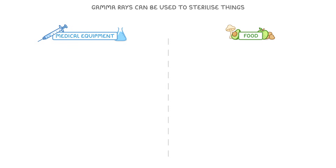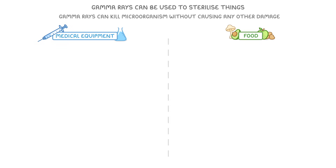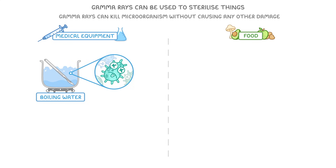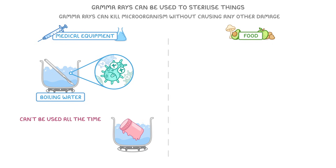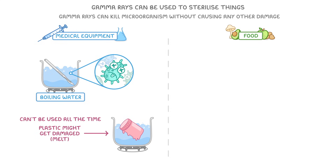The reason they're so useful for sterilization is that gamma rays can kill microorganisms without causing any other damage. For medical equipment, the other option would be to use boiling water to kill any harmful microbes at high temperatures. This works pretty well, but it can't be used all the time, because some materials like plastic might get damaged as they melt slightly. Gamma rays, though, don't do any damage at all, and so there's no risk of damaging the equipment.